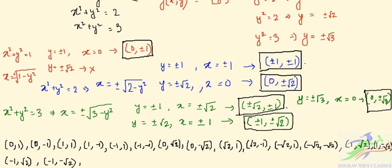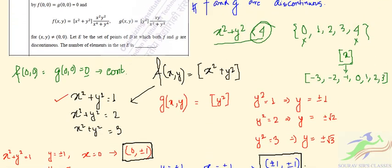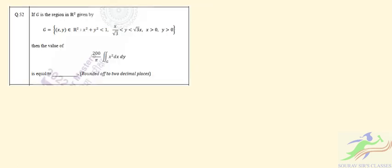So, finally for question 51, the number of elements in the set E is 80. Now moving to question number 52: G is a region in R² defined by x² + y² < 1 with x > 0 and y > 0, further constrained by x/√3 < y < √3·x. We need to find the value of a certain integral over this region.